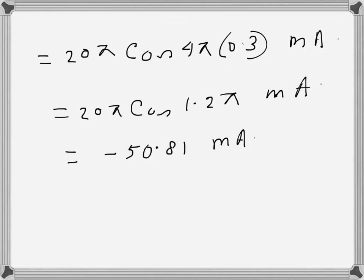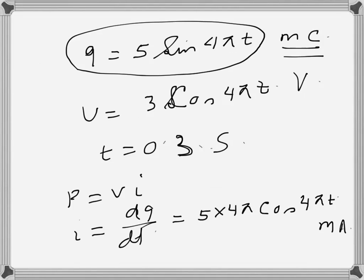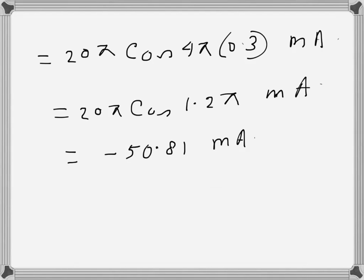Then I try to find the voltage, which is given as 3 cos 4πt. The voltage is 3 cos 4πt, so 4πt, where t is 0.3, gives 1.2π. This one will result in volts.